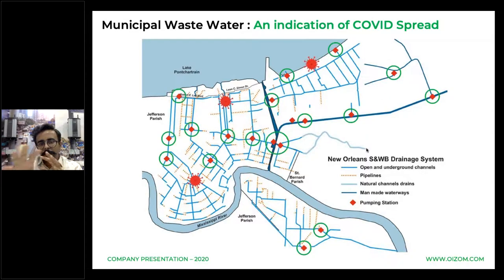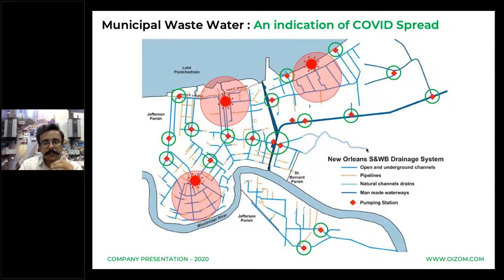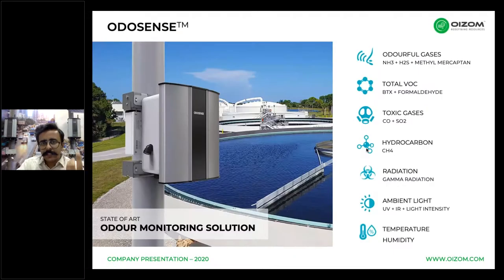Coronavirus spread can be identified near hospitals on the map. By identifying these hotspots we can alert the medical system and workers there to increase the frequency of testing — a very robust method to support workers in the field.